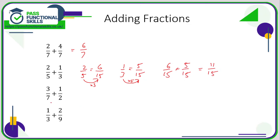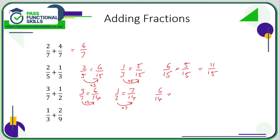The next question has seven and two as different bottom numbers. Does two go into seven? No. What about fourteen? Yes — fourteen can be divided by both seven and two, so fourteen is the lowest common denominator. Three sevenths: seven times two is fourteen, so double the top — that's six fourteenths. One half: two times seven is fourteen, so times the top by seven — that's seven fourteenths. The answer is thirteen fourteenths.